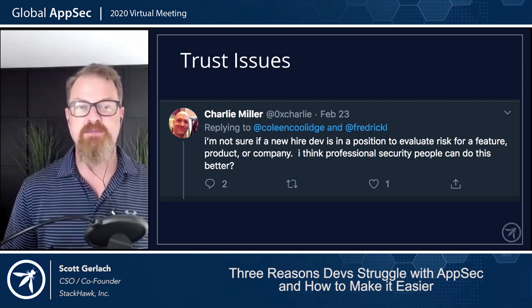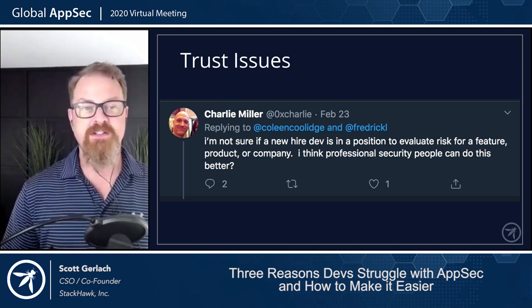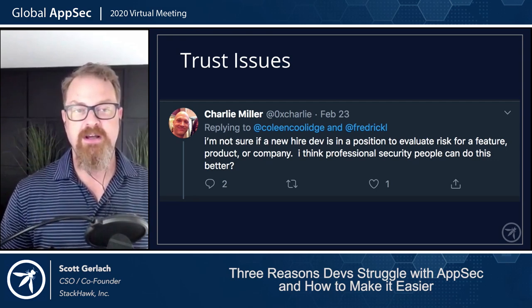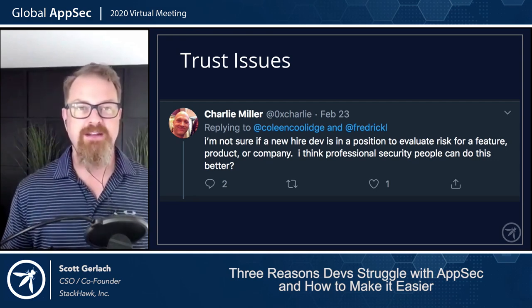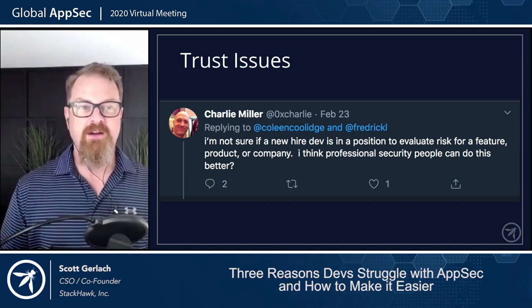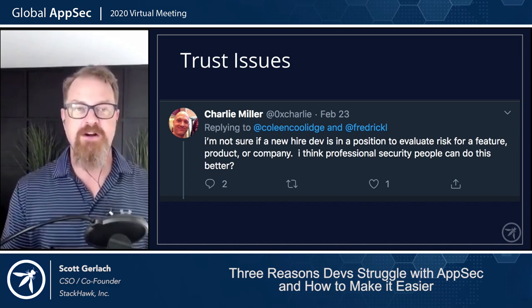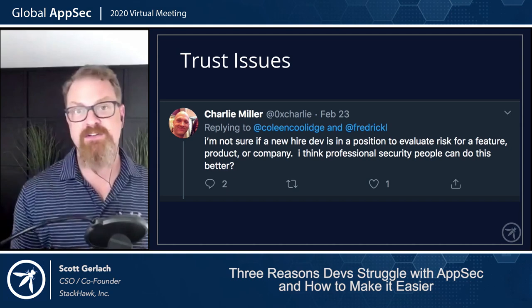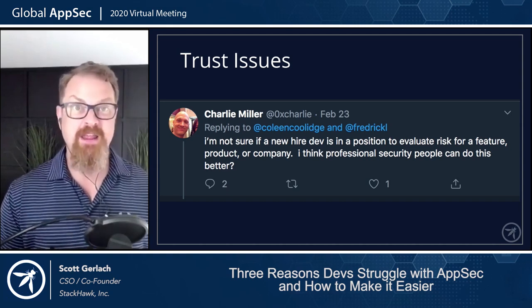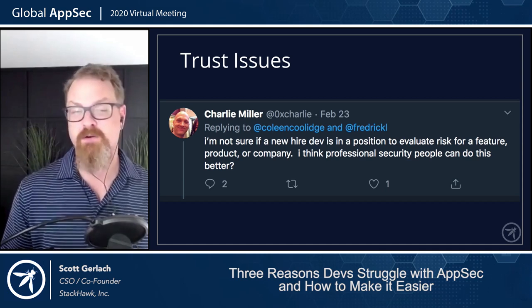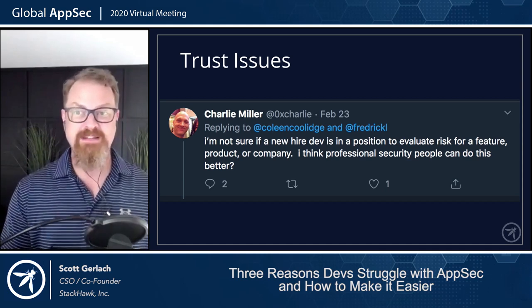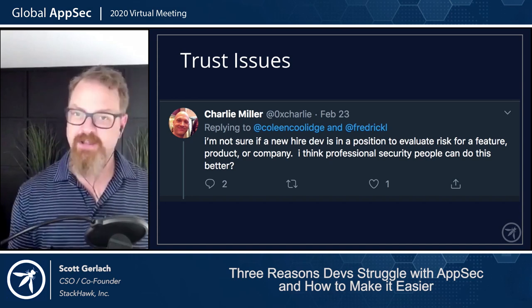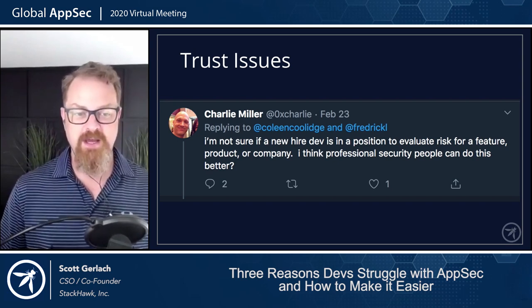He said: I'm not sure if a new hire dev is in position to evaluate risk for a feature, product, or a company. I think professional security people can do this better. And it just sums up the entire thing. The whole point is a new hire dev got hired to make risk decisions. They make risk decisions on how to write code and how to deploy code, and they work with their peers to figure out what risk is good and what risk is bad. So this is already happening whether or not the security team knows about it.